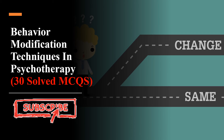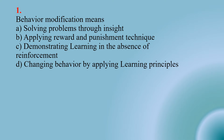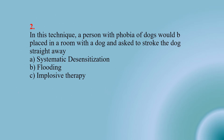Number one: Behavior modification means — Option A: solving problems through insight; Option B: applying reward and punishment technique; Option C: demonstrating learning in the absence of reinforcement; Option D: changing behavior by applying learning principles. The right option is D — changing behavior by applying learning principles.